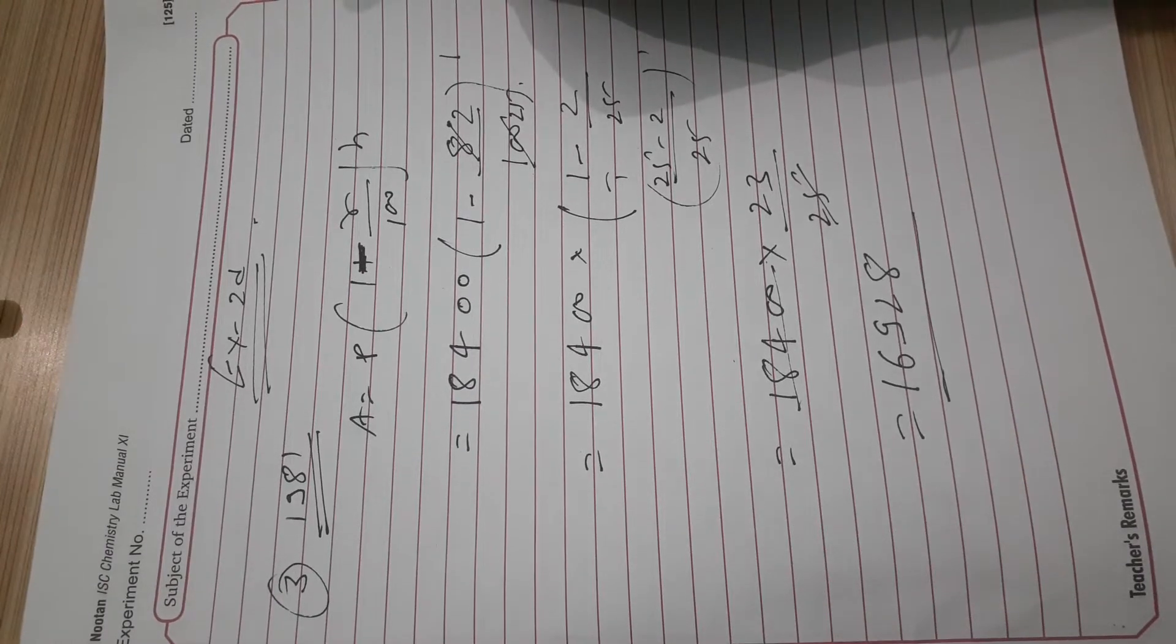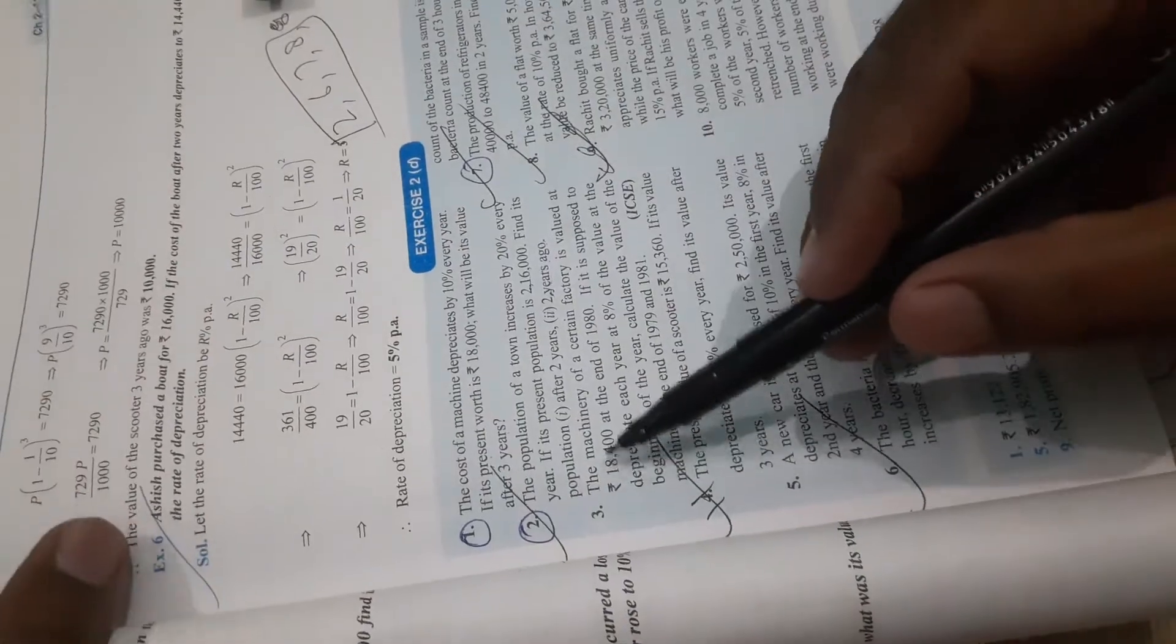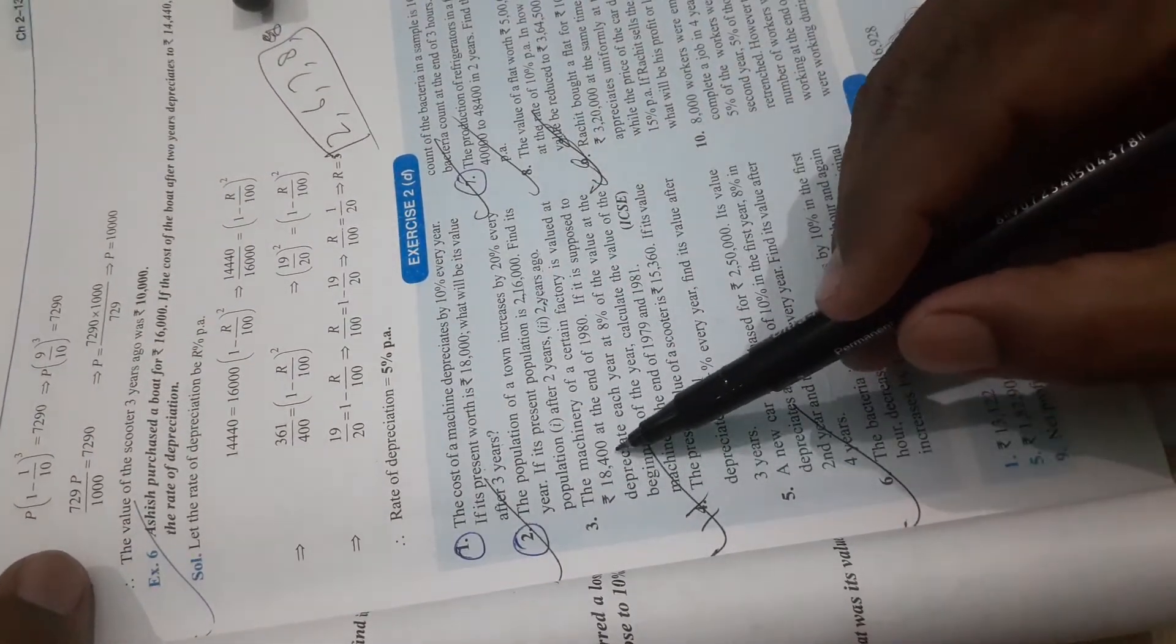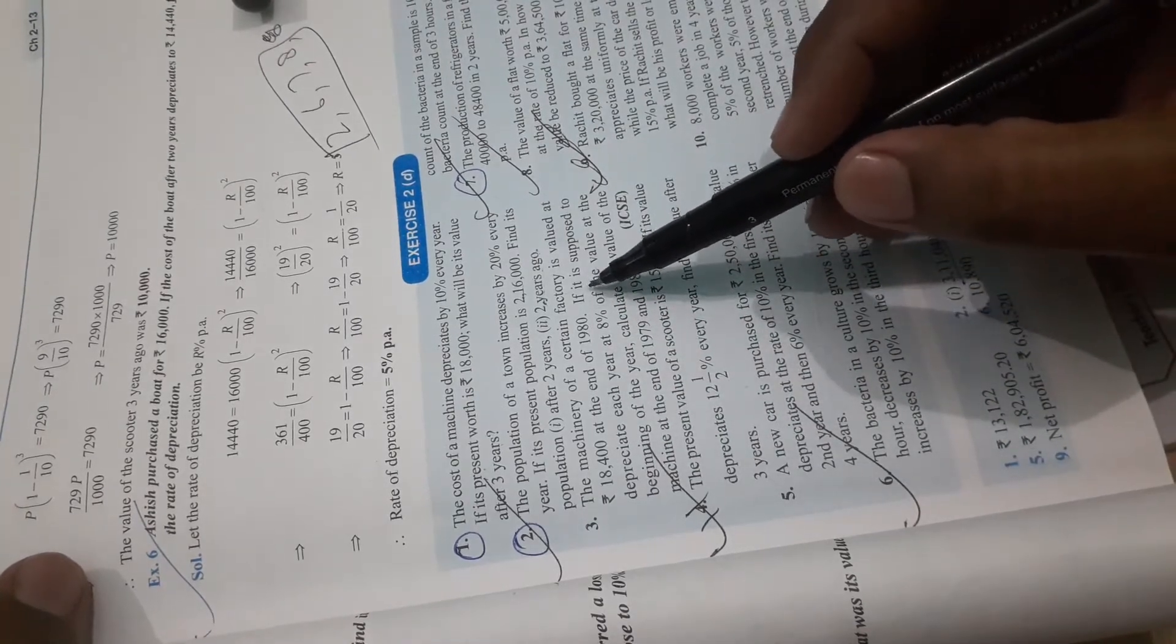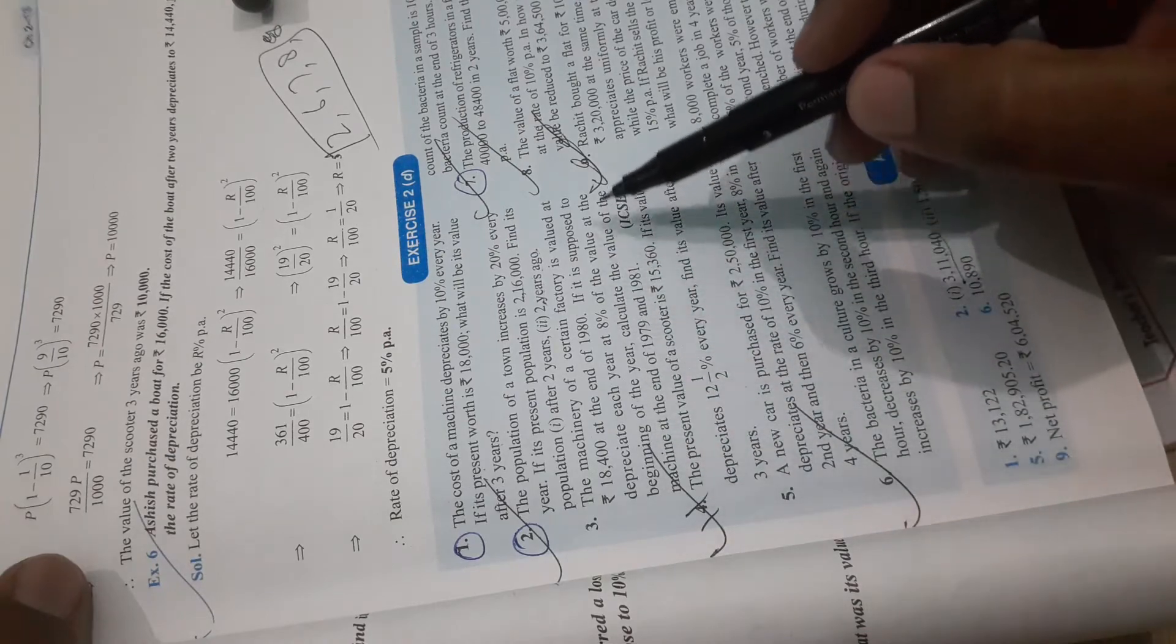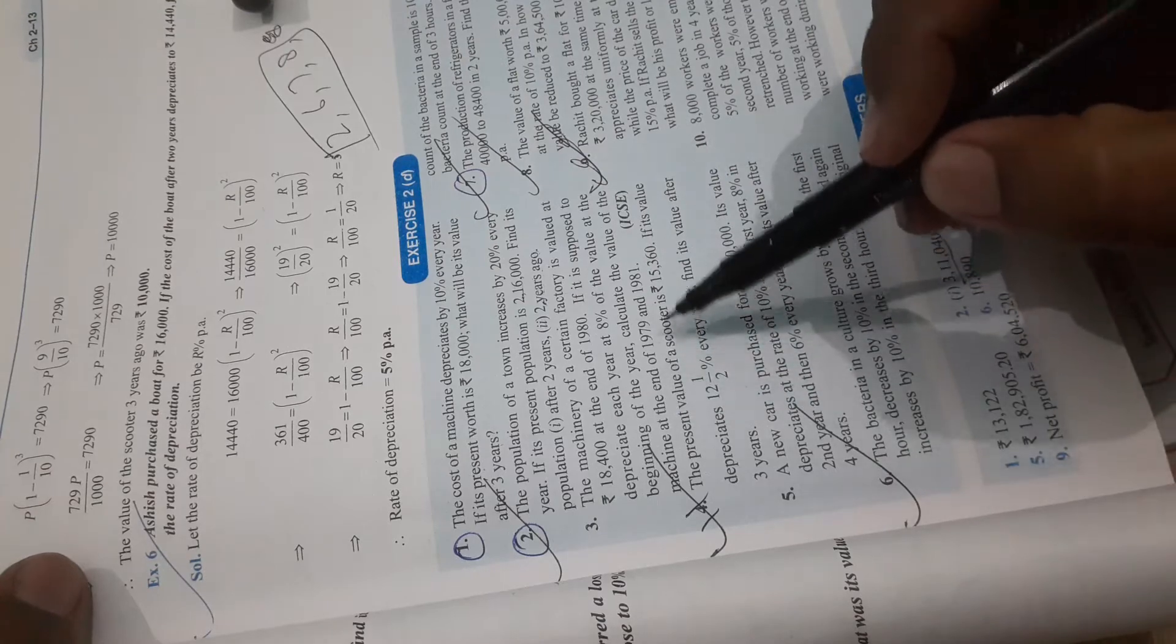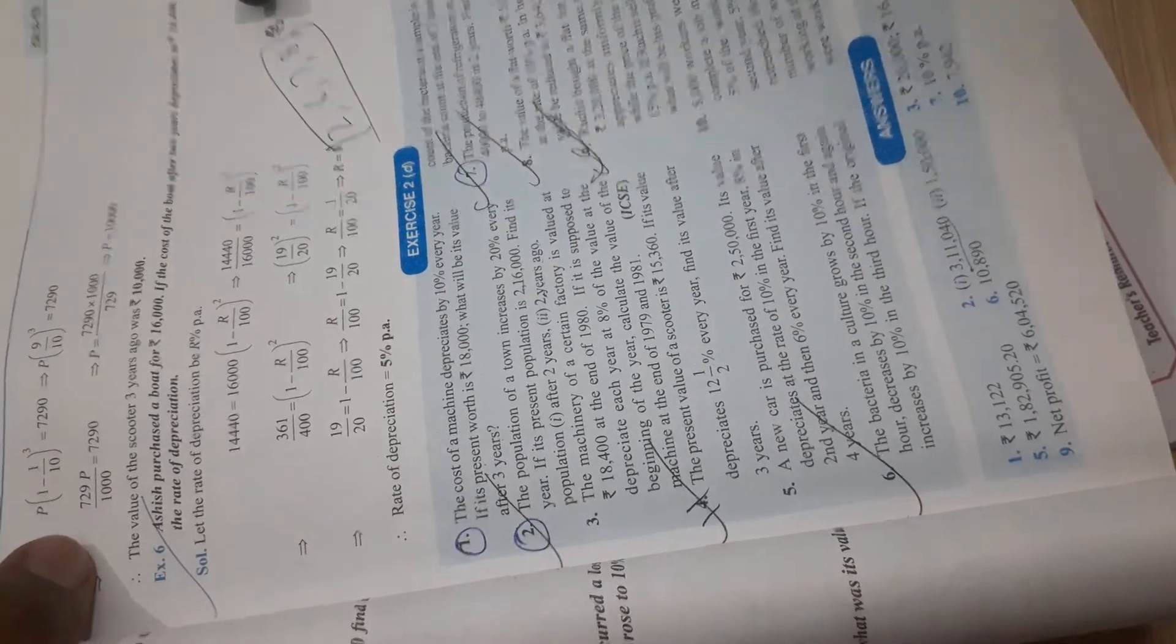Question number 3: The machinery of a certain factory is valued at 18,400 at the end of 1980. If it is supposed to depreciate each year 8% of the value at the beginning of the year, calculate the value of the machine at the end of 1979 and 1981.